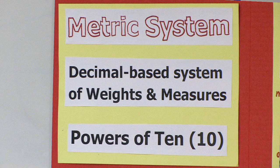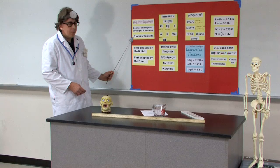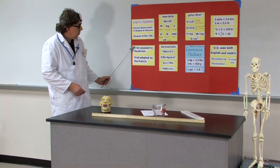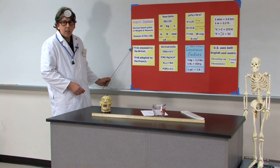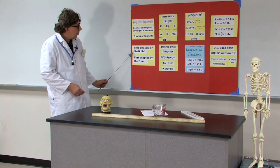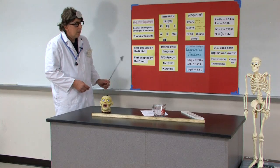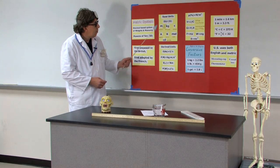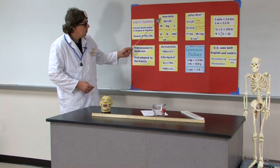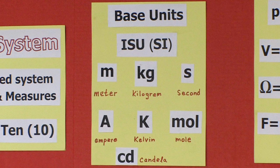The metric system is a decimal-based system of weights and measures based on powers of 10. First proposed by the British, first adopted by the French. It's a set of base units — we actually call this System International now.